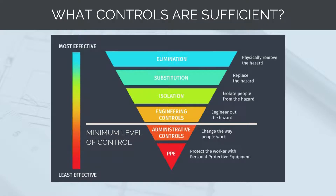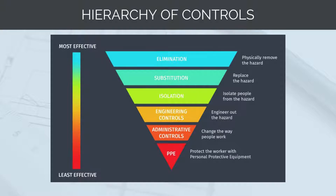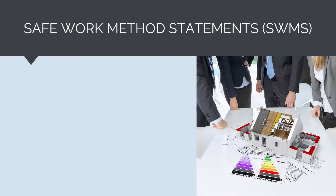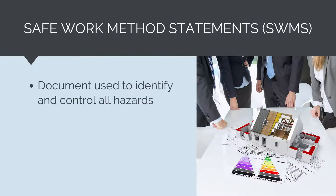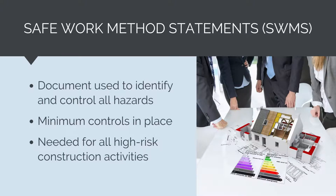The hierarchy of controls provides a broad way of categorising all our options for managing hazards. As a minimum, all hazards should be managed with at least an engineering control. An activity cannot proceed if there are only administrative controls and PPE in place. In the industry, this is often referred to as having an above-the-line control, where the line is drawn on the hierarchy of controls above administrative. We use Safe Work Method Statements, or SWMS for short, to check and verify that all hazards associated with an activity have been correctly identified and controlled.